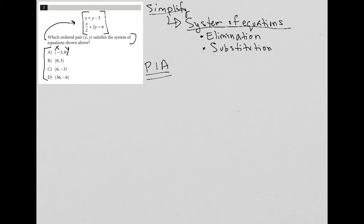For choice A, if x = 3 and y = 0, my first equation says x = y - 3. Let's check if that's true. Is it true that 3 = 0 - 3? That's not true because that would say 3 = -3. So choice A is gone.